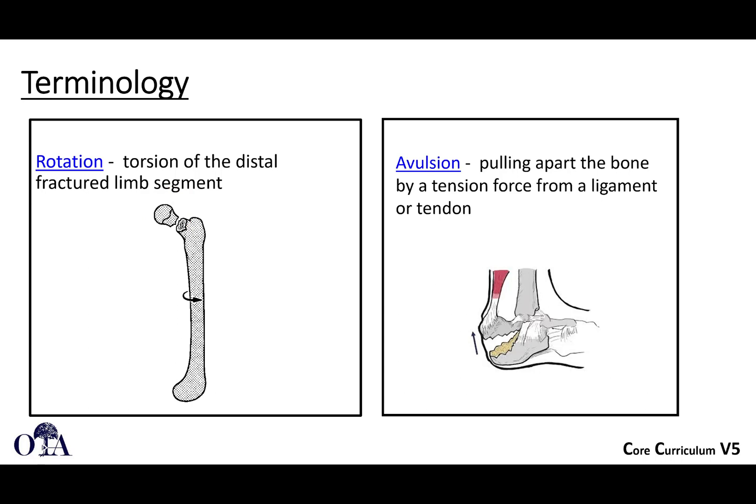Avulsion refers to a ligament or tendon pulling a bone fragment off its usual location. Here we can see a lateral view of the heel where the Achilles tendon has caused an avulsion of the calcaneus, pulling that fragment proximally.